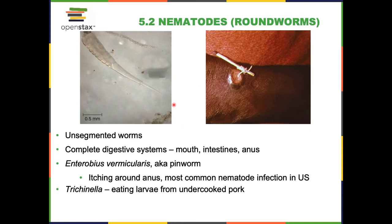Nematodes are unsegmented roundworms. Generally they do have a complete digestive system — a mouth, intestines, and anus — but they still prefer being in the host because the host does a lot of the digestion for them. Enterobius, aka pinworm, is the most common infection in the U.S. A pinworm causes itching around the anus as it's leaving. Similar to how dogs sometimes scoot because they have worms coming out — same with pinworm. As the worms crawl around, it causes itching.